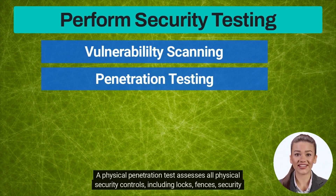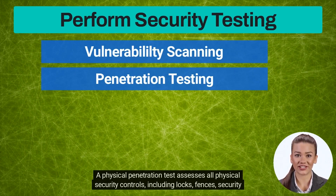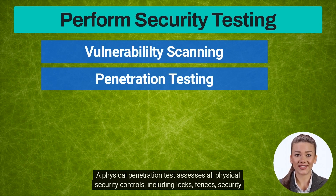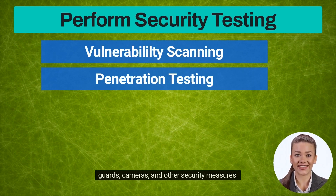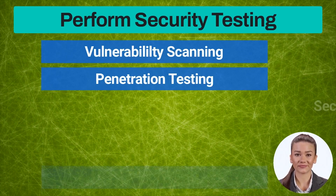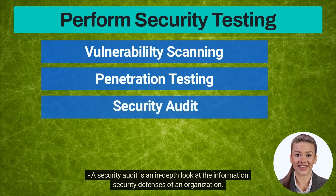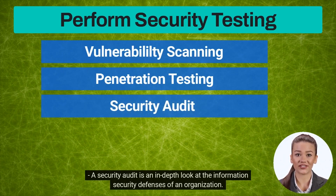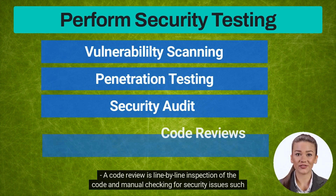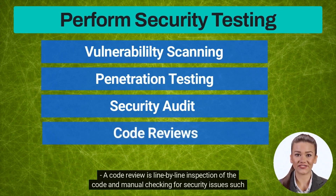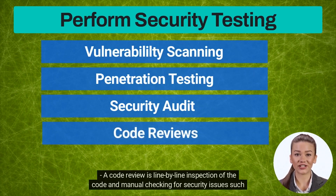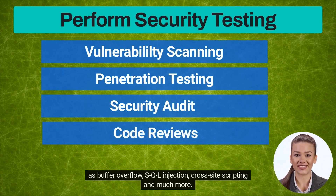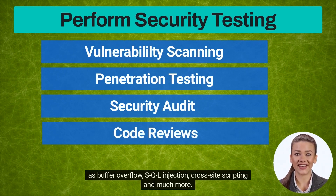A physical penetration test assesses all physical security controls including locks, fences, security guards, cameras, and other security measures. A security audit is an in-depth look at the information security defenses of an organization. A code review is a line-by-line inspection of the code and manual checking for security issues such as buffer overflow, SQL injection, cross-site scripting, and much more.